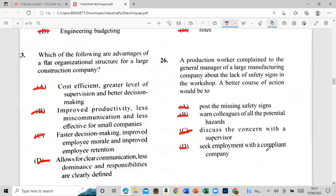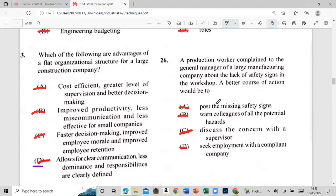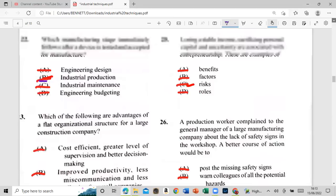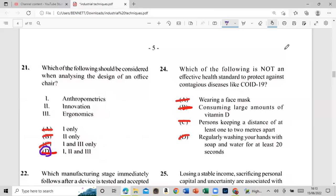23: which of the following are advantages of a flat organizational chart structure for a large construction company? Cost efficient, greater level supervision, and better decision making. Be improved productivity, less miscommunication, and less effective for small companies. See faster decision making, improve employees morale, and improved employee retention. That is a lie. For some foolish, allows for clear communication, less dominance, and this points are clearly defined. So 23 is. Hit the like button if you're not. Hit the like button if you're not. Subscribe. We know where I wait till you're not hit the like button.